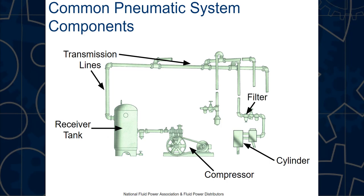The filter removes dust and condensation water from the line so it doesn't enter the rest of the system. The regulator controls the pressure going out — for example, you might have 100 psi in the tank but only want 50 psi going to the equipment. Drains allow removal of any water or condensation that develops inside the line.